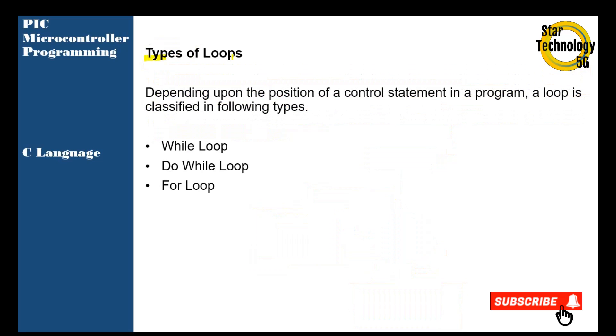Types of loop: depending upon the position of a control statement in a program, a loop is classified in the following types — while loop, do-while loop, and for loop.